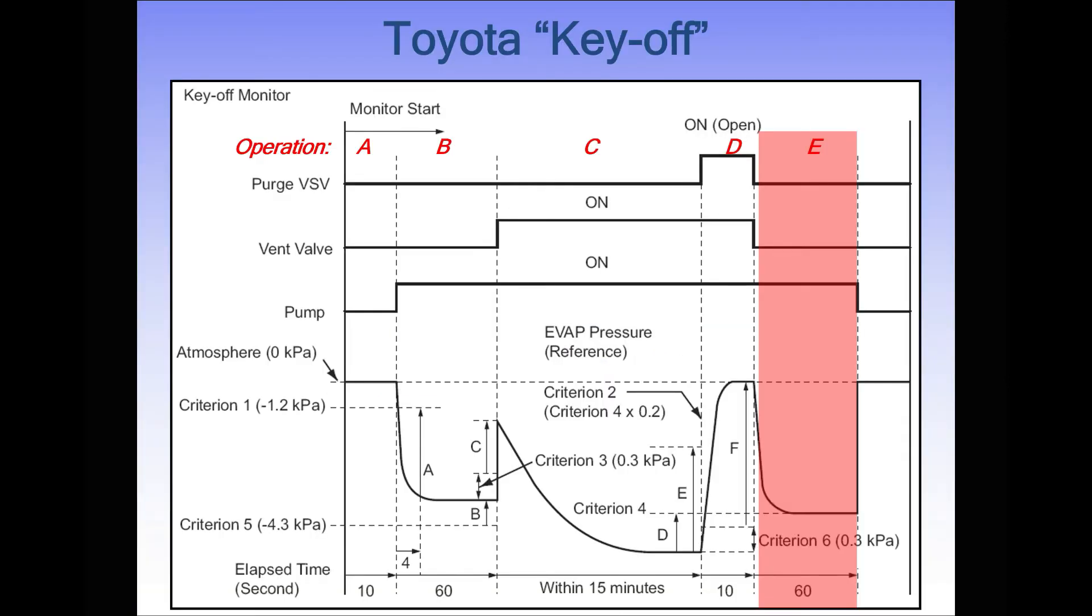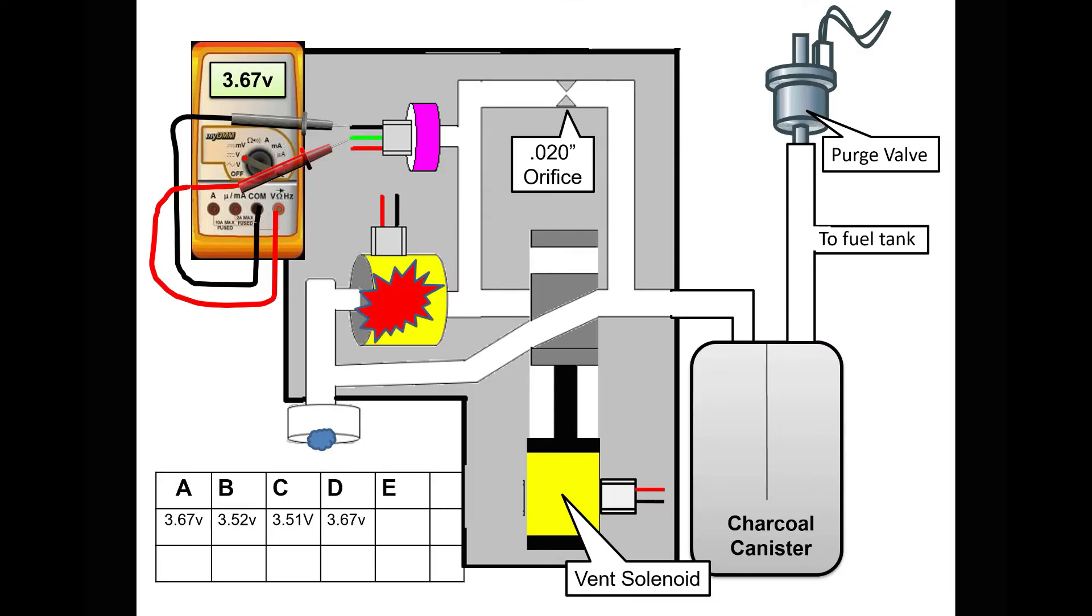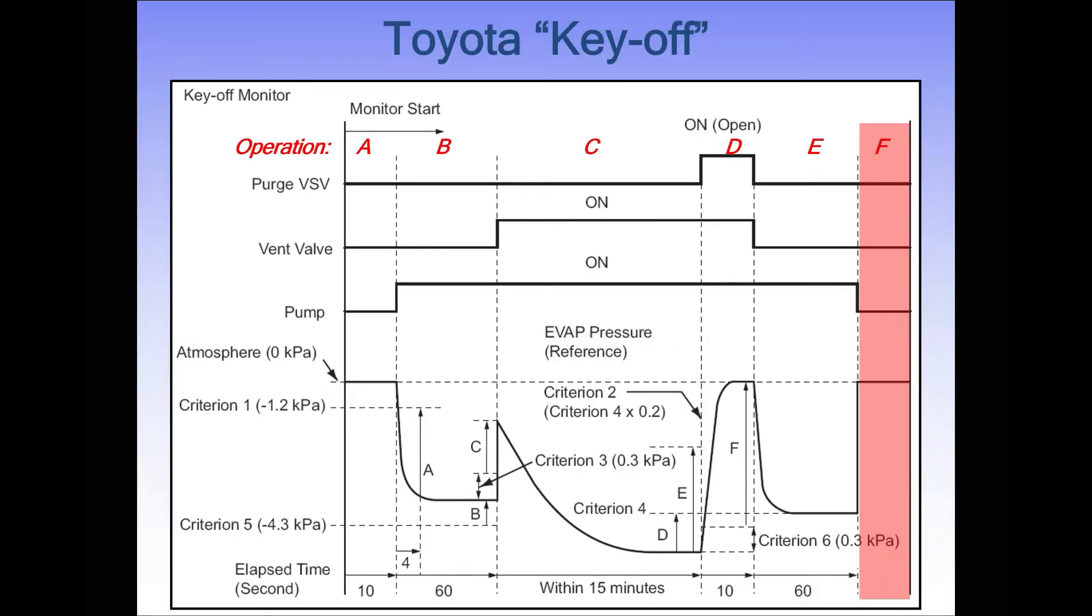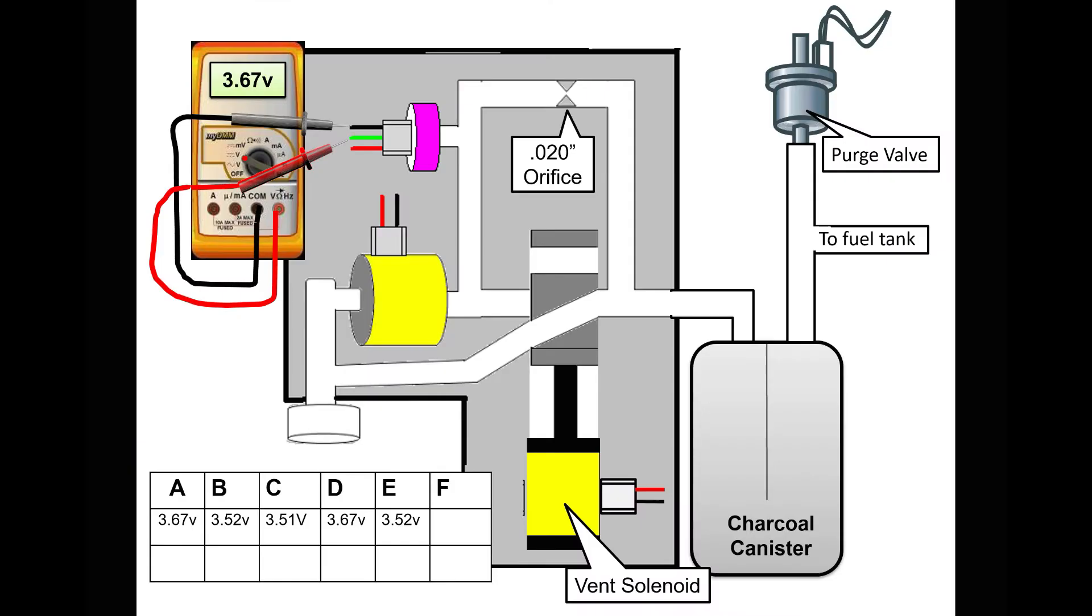Second calibration. It's going to check itself now that it's done. Everything turned off except the pump. We're plumbed to our 20 thousandths orifice. Make sure we reach our 19 inches of water column again. Here's the scanner data: purge valve off, vent valve off, vacuum pump on, 19.47 inches of water column. Second calibration passes.